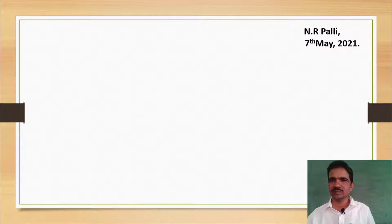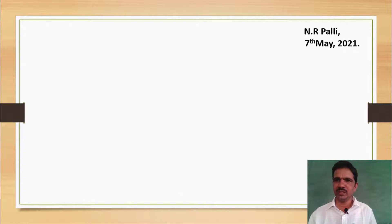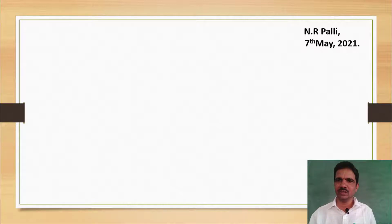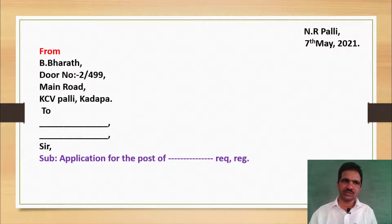Here, for example, 'Nrpalli' — after writing the place, we should use a comma and then the date, such as 7th May 2021. This is the correct format for the heading or writer's address. Next, we have to write the from address.